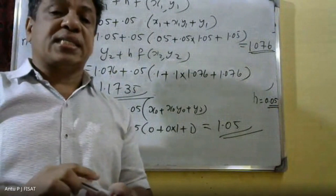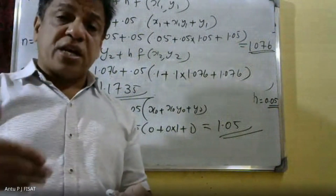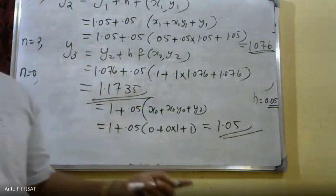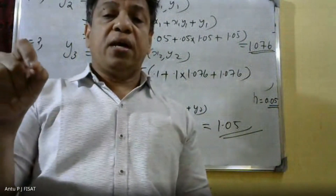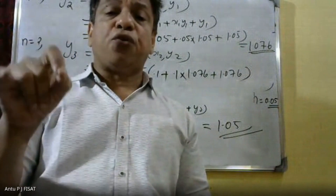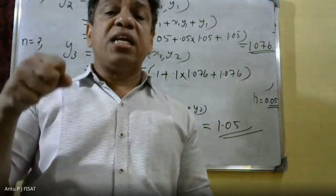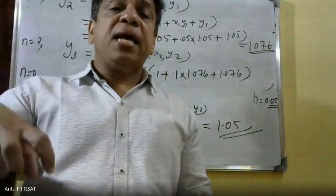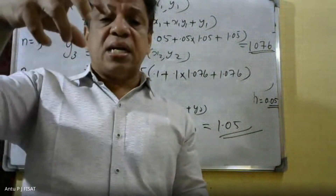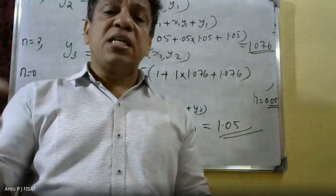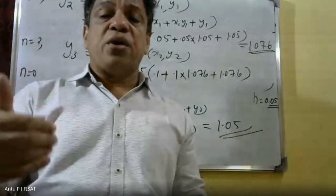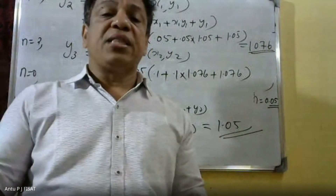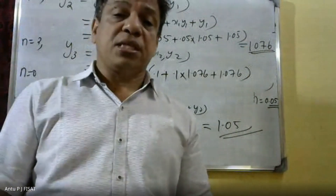This is the procedure for finding y_1, y_2, y_3, etc. We can continue to find y_4, y_5, and so on using the Euler formula: y_(n+1) = y_n + h · f(x_n, y_n). By treating dy/dx as f(x, y) and substituting values, we can easily find successive y values. This is the Euler method in numerical methods.